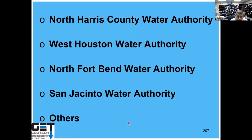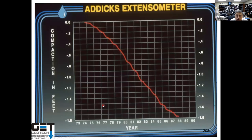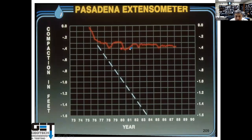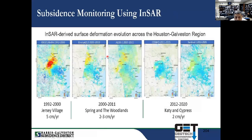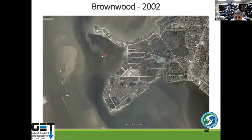To mitigate that, we're switching to surface water systems — using North Harris County Water Authority, West Houston Water Authority, North Fort Bend Water Authority, San Jacinto River Authority, and others — so we do not dig wells to get groundwater. The Addicks area has been dropping roughly half an inch a year. Pasadena is kind of stabilizing. Subsidence is happening in the high growth areas — when you go to Katy, Fort Bend, Montgomery County, and South Montgomery County, you're going to have subsidence. All this subsidence causes flooding.